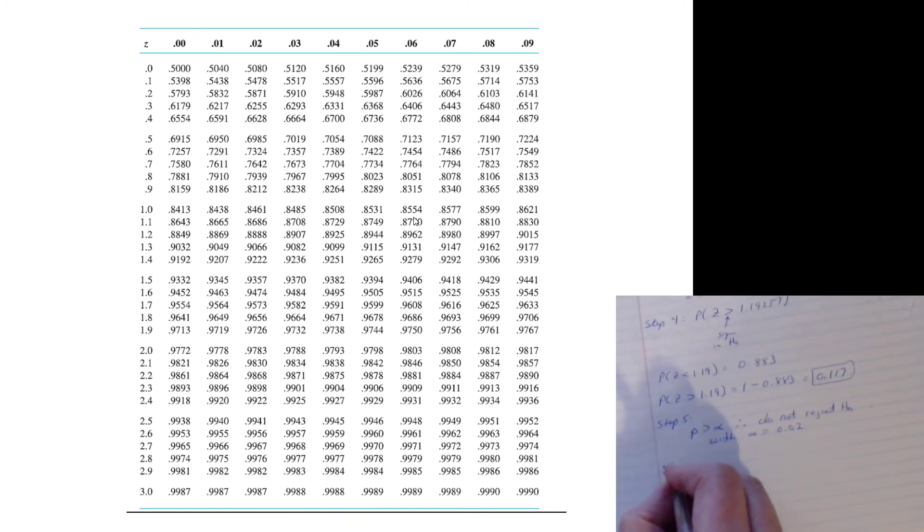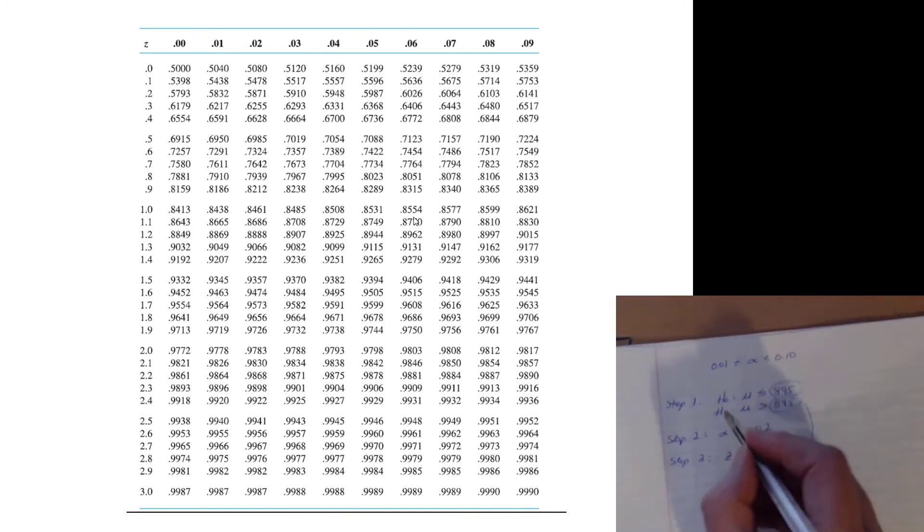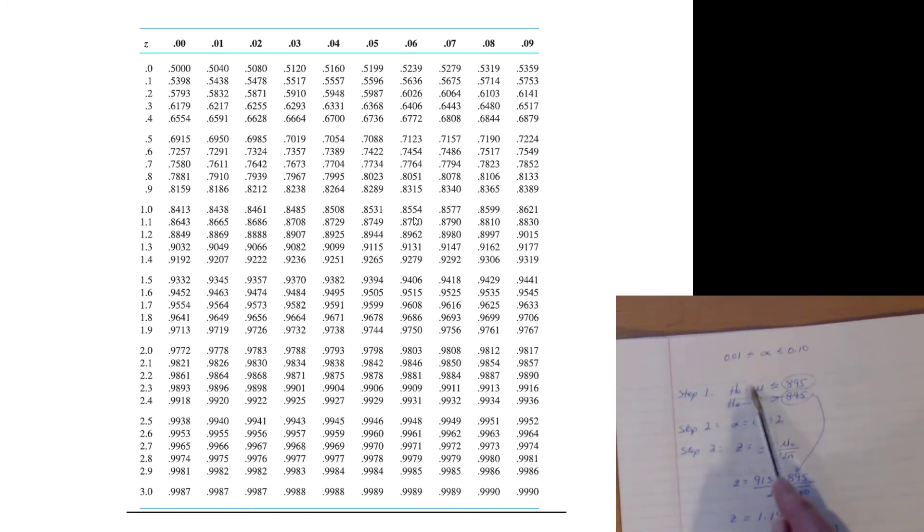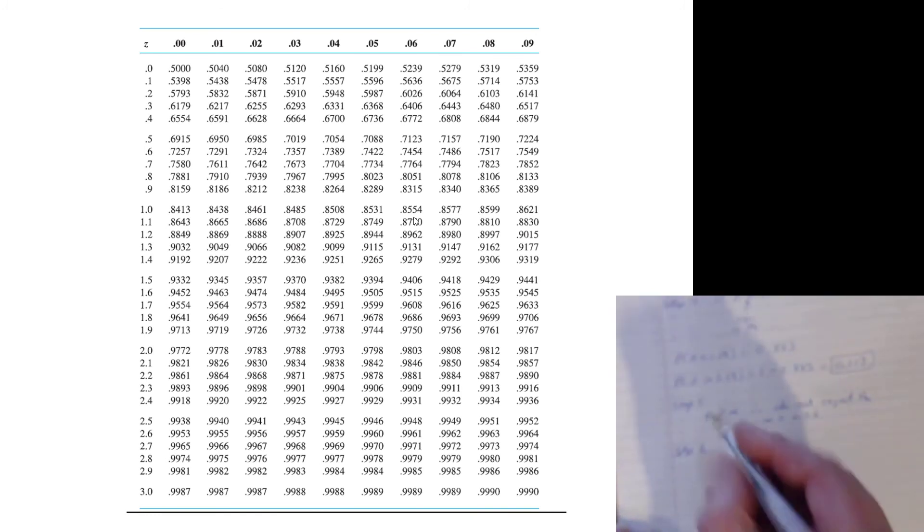And then step six, if we did not reject H naught, what do we conclude? Well, it depends. We don't want to say anything that suggests that we have accepted H₀. So we just say we've not accepted HA, crossed it out. So essentially, we'll say whatever is in HA, not likely.